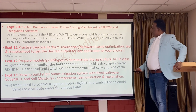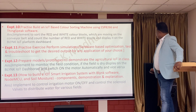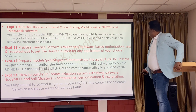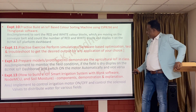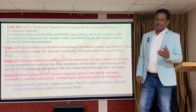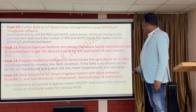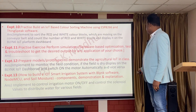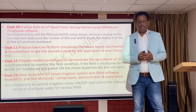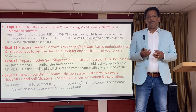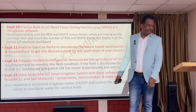Coming to the 12th experiment: we have to prepare a model or prototype to demonstrate agriculture IoT in class. The plan is to implement monitoring of field conditions — whether the field is dry or wet. You can use a field wetness sensor. If it is dry, display on the dashboard and switch on the motor automatically, and vice versa. Display the condition — dry or wet — in the IoT dashboard, and if the field is wet, the motor stops; if dry, it turns on.